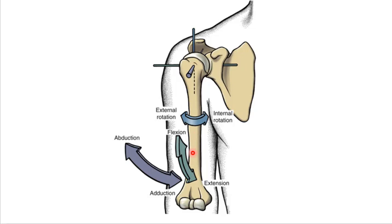You can see that it does flexion and extension, abduction and adduction, and internal-external rotation. Keep in mind, we're just looking at the glenohumeral joint here — the shoulder — and we'll be looking at the shoulder complex as part of that relationship.